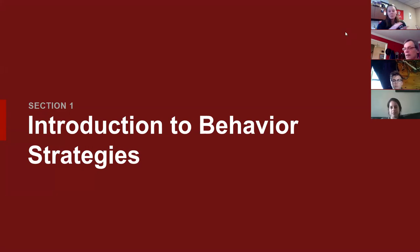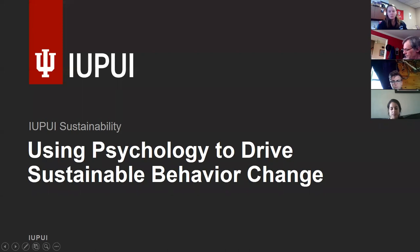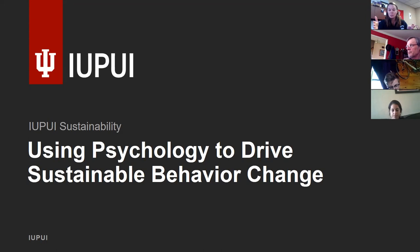Today what we're going to be talking about is how to use psychology to drive sustainable behavior change. What this really means is what sort of tips and tricks can we use in the sustainability field to ultimately try to get people to do what we want them to do — things like how to recycle, encouraging them to recycle, or to turn their lights off before they leave the room, or use alternative transportation. But these sorts of tactics can be used outside of sustainability too.